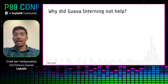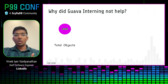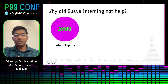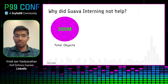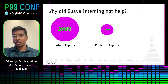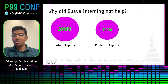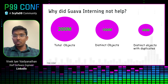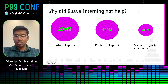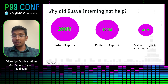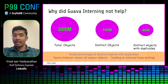But why did it only help us reclaim 5 GB? What about the remaining 8 GB? We analyzed the data characteristics of the column and found that across all shards, this column buffer had 200 million string objects, of which 100 million were distinct, and of those, only 40 million had duplicates. As you know, the Guava interning technique stores a unique copy for all distinct string objects — that is why we were only able to save 5 GB and not the entire 13 GB.